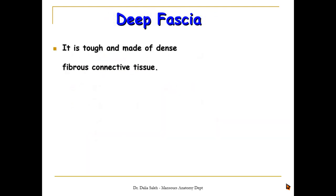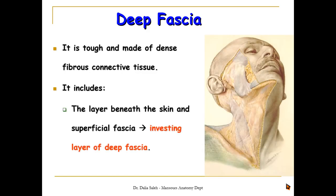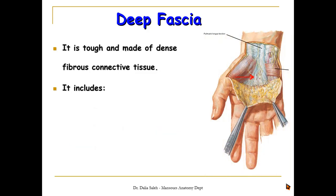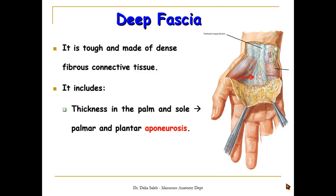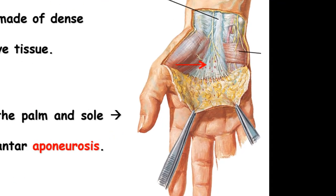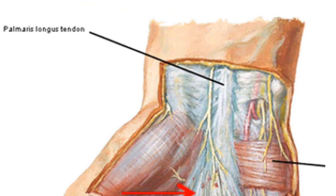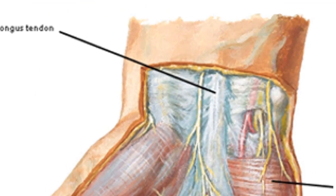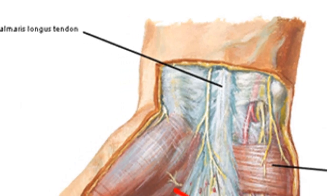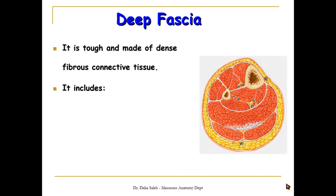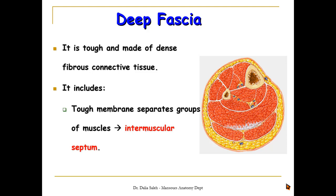The deep fascia is tough and made of dense fibrous connective tissue. It includes the investing layer of deep fascia — the layer beneath the skin and superficial fascia — which wraps around the whole body. It also includes thickenings of deep fascia at the palm of the hand and the sole of the foot, called the palmar and plantar aponeuroses. We also have localized thickenings around the wrist and ankle called the retinacula. Another form of deep fascia is stretched between bones to separate different muscle groups — we call these the intermuscular septa.